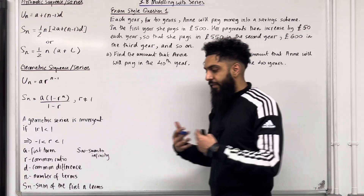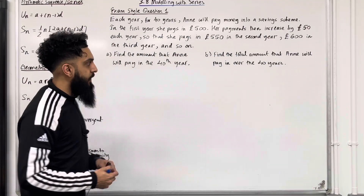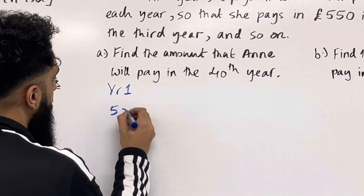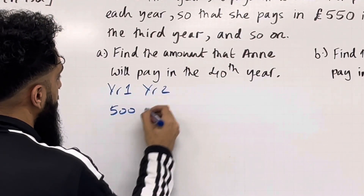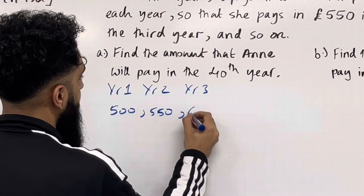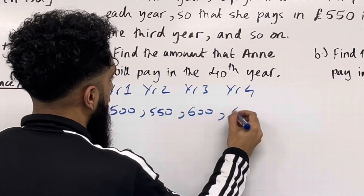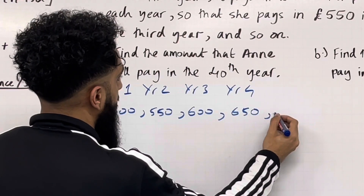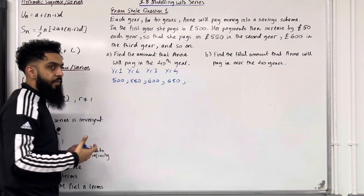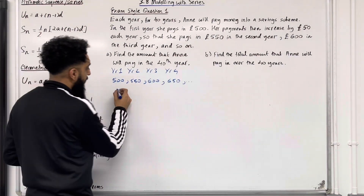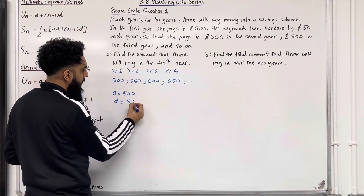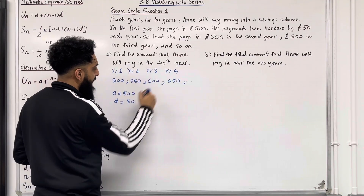The first step is to write down the first few terms in the sequence. So we have year 1: £500, year 2: £550, year 3: £600, year 4: £650, and so on. Now what we notice is that we have an arithmetic sequence. A, the first term, is £500. D, the common difference, is £50, because we're increasing by £50 each year.